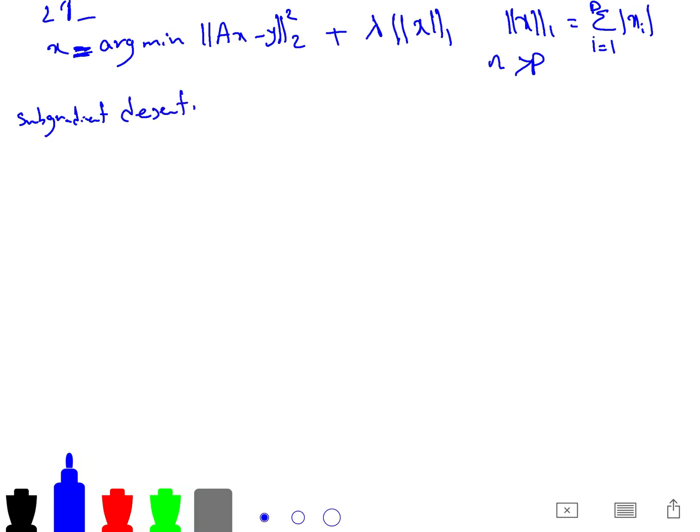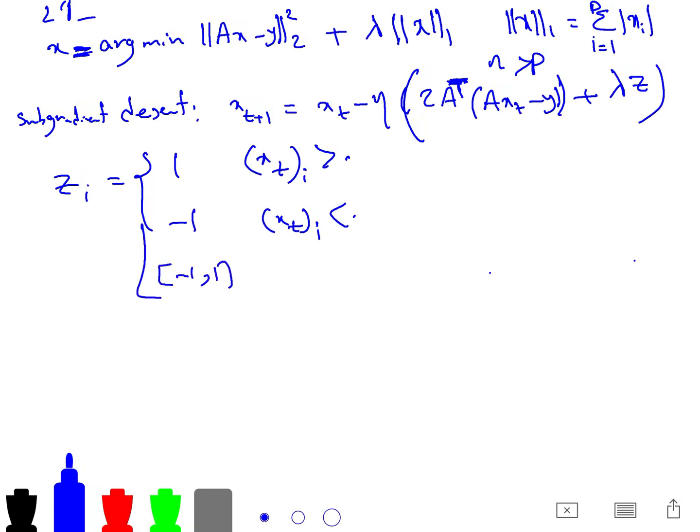Subgradient descent has this update: x_t+1 is equal to x_t minus eta times the gradient, which is 2A^T(Ax_t - y) plus lambda z, where z is your subdifferential. This is 1 if the i-th coordinate of x_t is greater than zero, minus 1 if it is less than zero, and this is the interval [-1, 1] if the i-th coordinate of x_t is equal to zero.